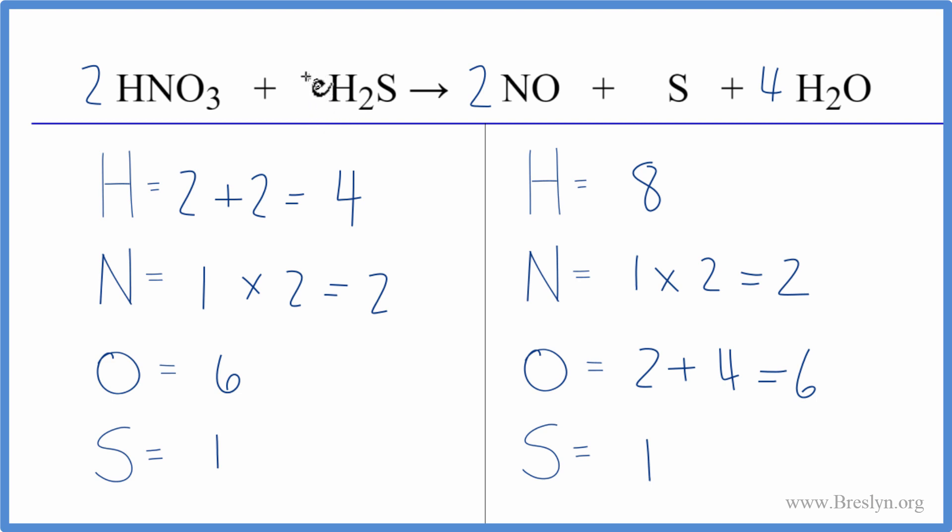It looks like if I put a three in front of the H2S, that'd be two times three is six plus one times two. Six plus two would give me eight. That would balance them. So let's do that.